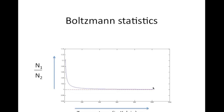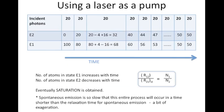Hence we cannot achieve lasing action this way, so we need another source of energy to try to achieve population inversion. This source is called a pump. Boltzmann statistics apply only under the conditions of thermal equilibrium, so to achieve population inversion we need to break down this thermal equilibrium. For this, we can use an optical, chemical, or electrical pump, or even a laser as a pump.